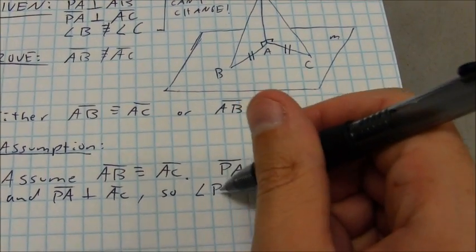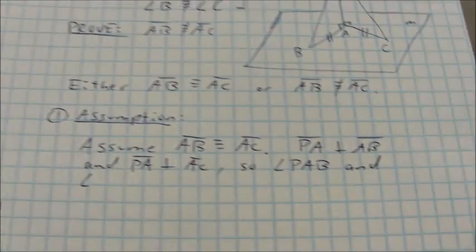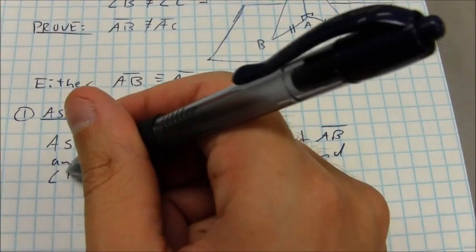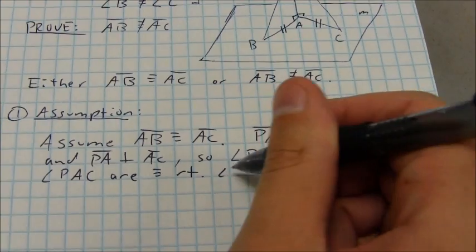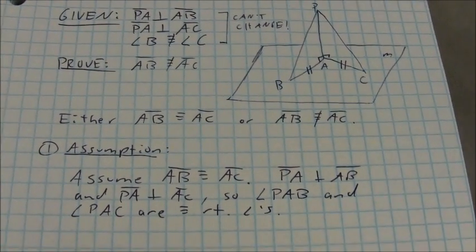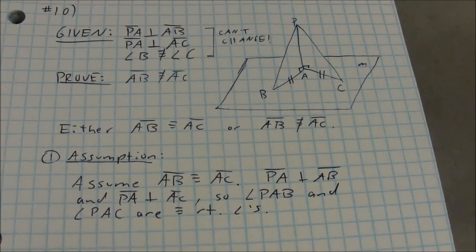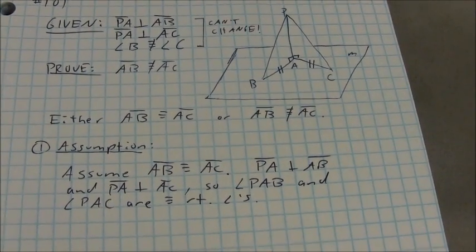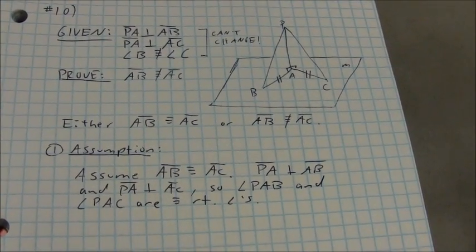So angle PAB and angle PAC are congruent right angles. Again, you don't need full if-then statements for these proofs. You want to explain what you know and why you know it. It's a little bit more like an open response, more so than your typical full two-column proof where you're having full if-then statements.